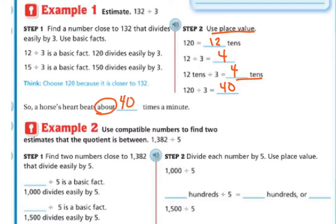So a horse's heartbeat beats about 40 times. We're not doing the exact, we're not doing 132 divided by 3. We're doing compatible numbers that are close. So our estimate is going to be 40 times a minute.